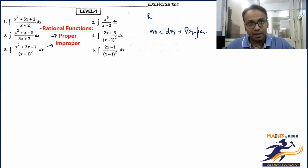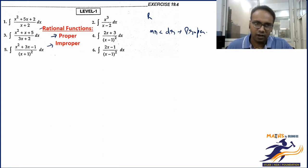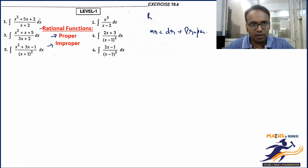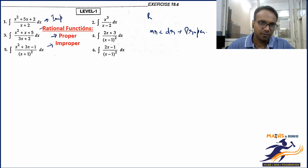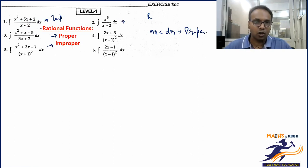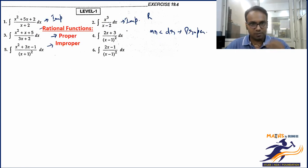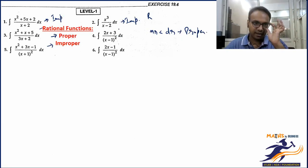Looking at our examples: the first has degree 2 in numerator and degree 1 in denominator — that's improper. The second has degree 3 in numerator and smaller degree denominator — also improper. The third is also improper since numerator degree is 2. The fourth has degree 1 in numerator and degree 2 in denominator — this is a proper rational function.